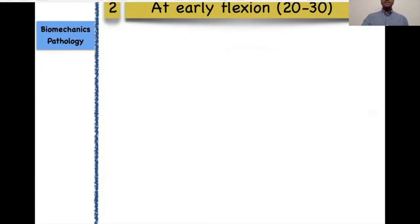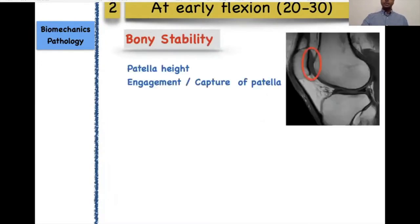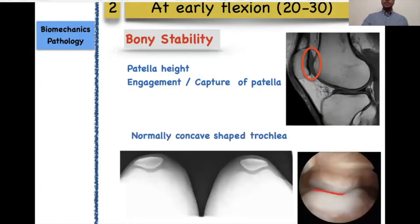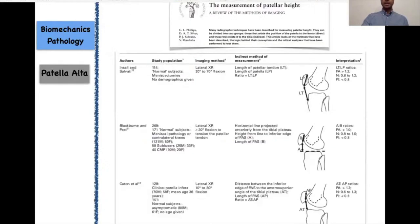As the knee goes into 20 to 30 degrees of flexion, stability is now provided by bony stability. There are two important things to consider: the patella should be at an appropriate height so that it is engaged or captured in the normally concave trochlea. So two things are important — the normal shape of the trochlea and the patella at appropriate height to engage into it.